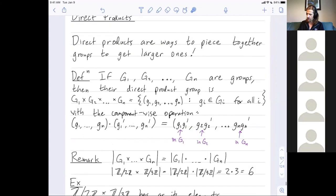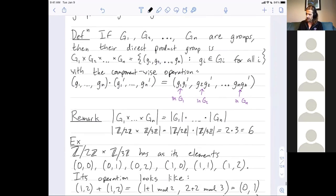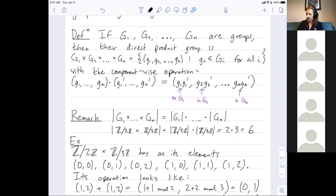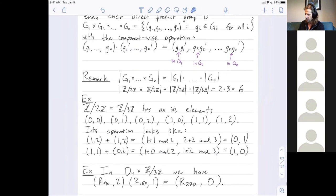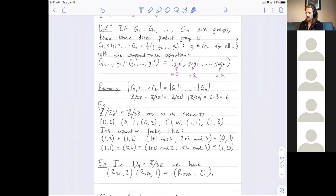So, I've given the philosophy of direct products. There are ways to combine simple groups into larger groups. Here's the precise definition of the elements and how you multiply them. The size of a product group is the product of the sizes of the various groups. Z mod 2Z cross Z mod 3Z is a group of size 6, and I've listed those 6 elements here. You can combine whatever groups you want. They don't have to have anything to do with each other. In this last example, I combined a group of symmetries with a group of integers mod 3. Public questions about direct products?